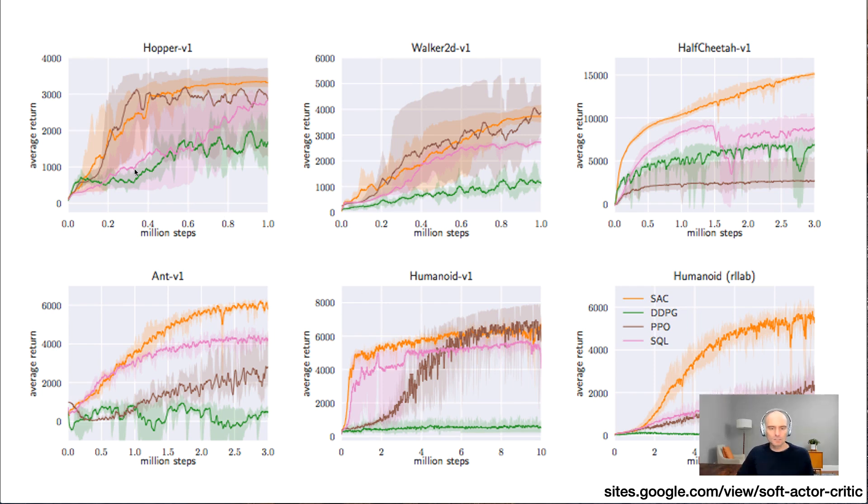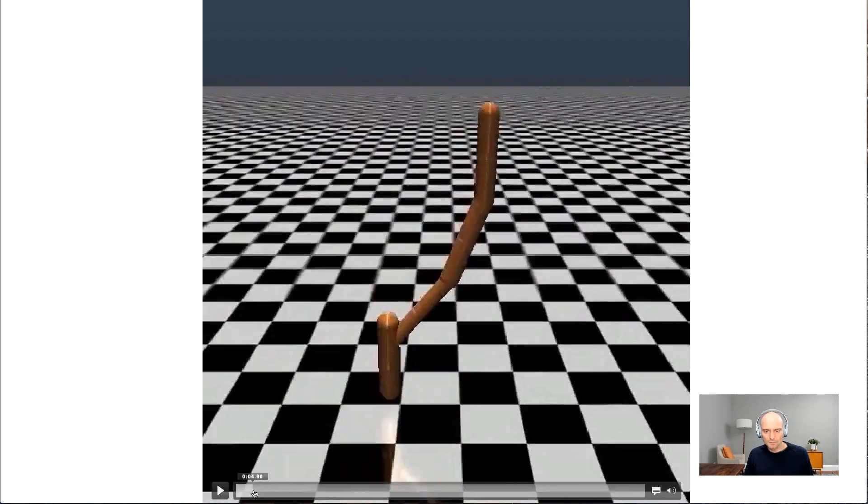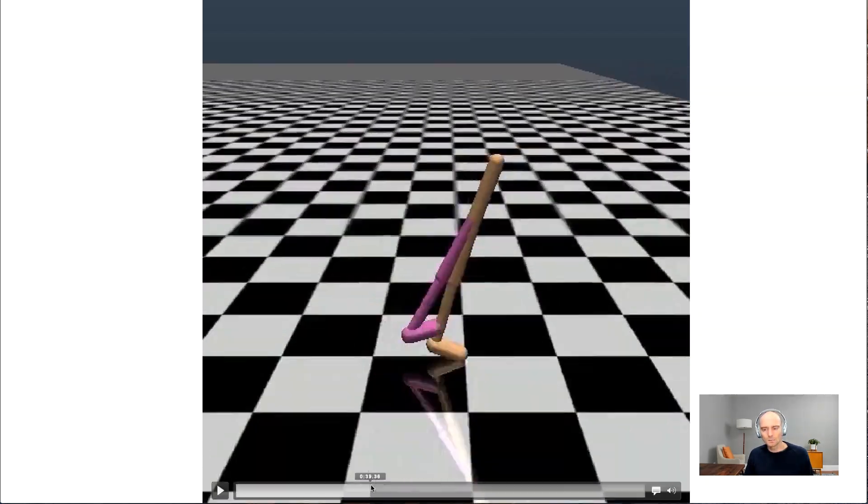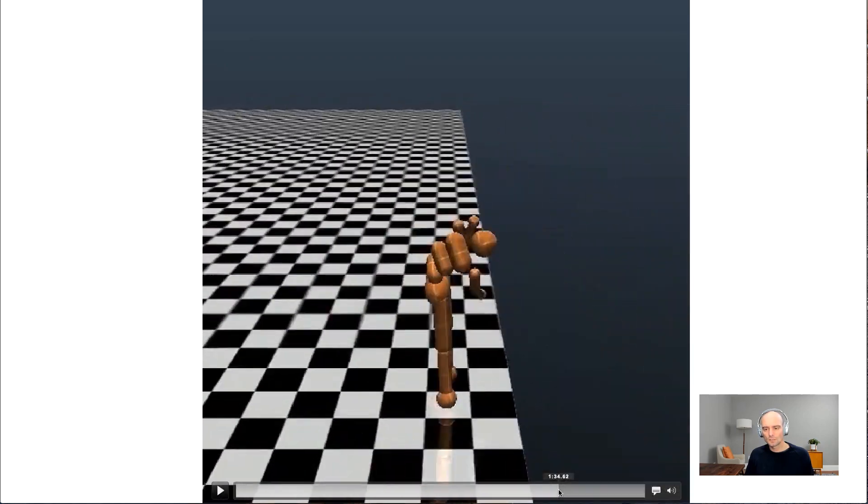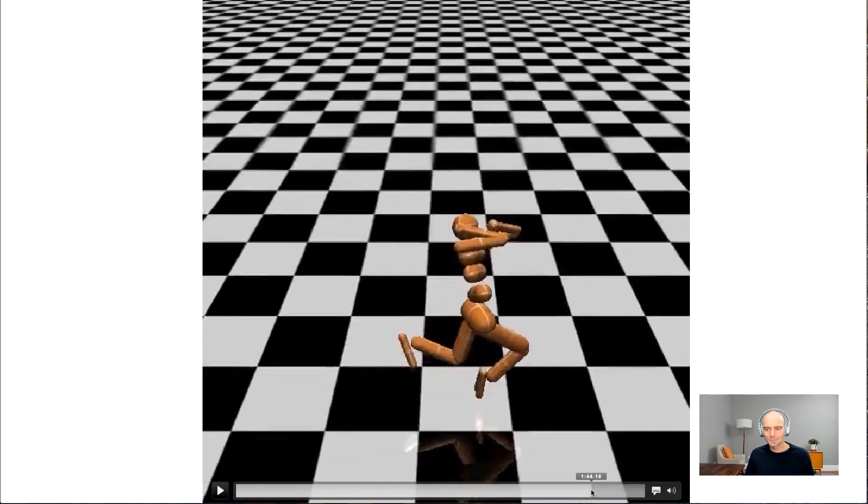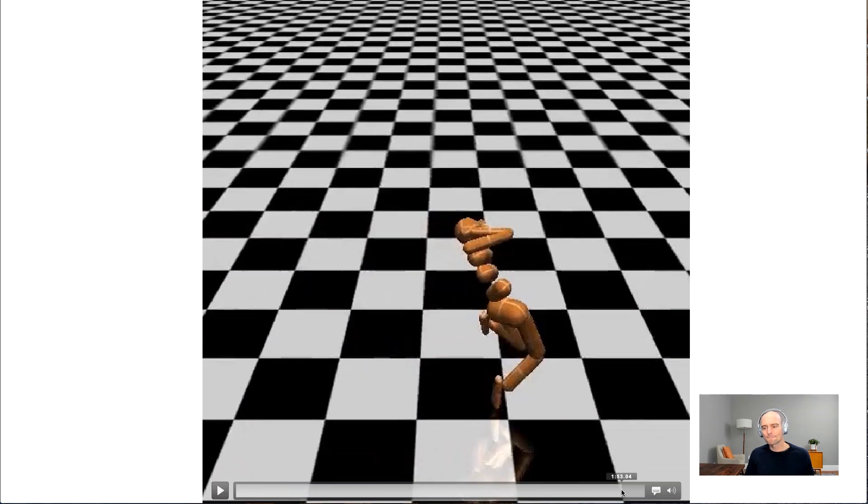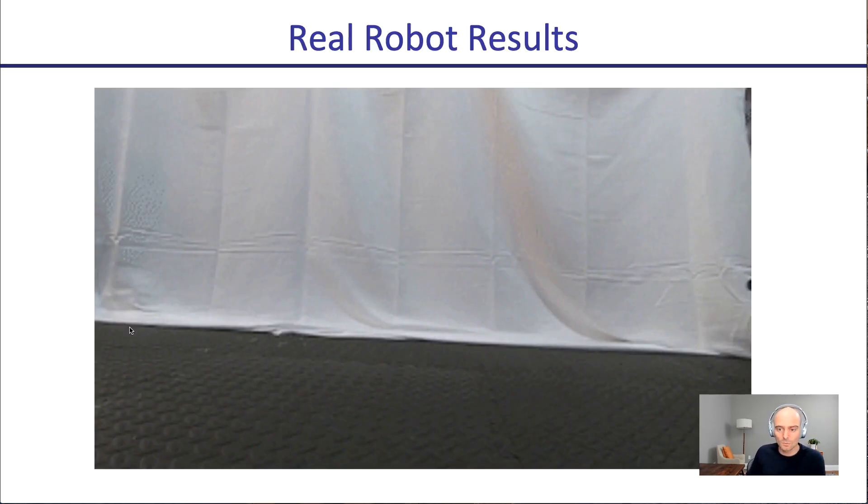Then here are a few other environments. Again, in yellow soft actor critic consistently having really strong learning curves compared to the other methods. And that's also why it has become very often a method of choice. Here's the video. So Hopper learns to hop really well. Walker learns to run. Cheetah runs off the grid. Humanoid learns to walk in some interesting ways. So what we see here is that all these canonical environments, soft actor critic can do really well on.